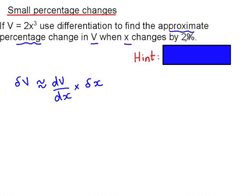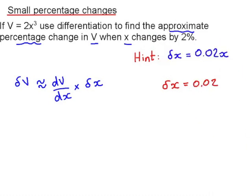Now x changes by 2%, so a common error here is to think that delta x is 0.02, but you need to remember that x is changing by 2% of itself, so the small change is actually 0.02x and not just 0.02.